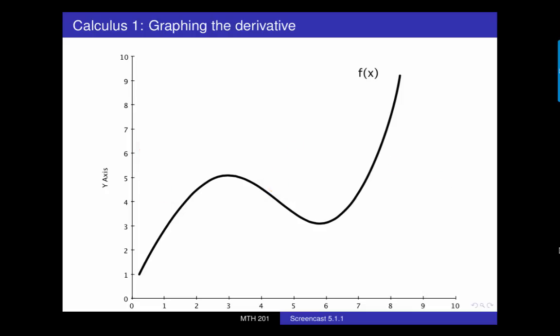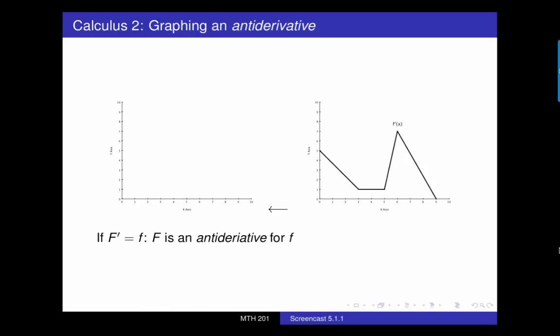Now in this section, we're attempting to reverse this process. We're given the graph of the derivative of a function and are asked to reconstruct a reasonable graph of the original. In situations like this, we're given a graph of a function called little f, and that little f is actually the derivative of some other function, big F. Then big F is known as an antiderivative of little f.